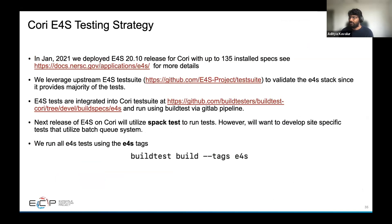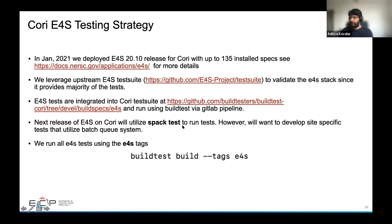The core E4S testing strategy: in January of this year, we deployed the E4S 21.0 release with more than 135 installed specs. We leveraged the upstream E4S test suite to validate our stack. We integrated the E4S tests into our Cori test suite and used that to run BuildTest GitLab pipelines. The next release, E4S 21.02, will utilize Spack tests, but we still want to develop site-specific tests that utilize the batch queue system. We can tag all of these together and run an E4S test using the tags functionality in BuildTest.